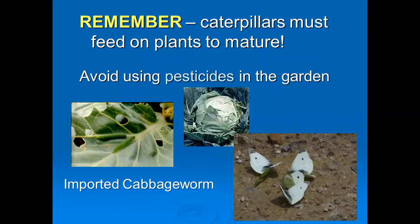I can't say this enough: caterpillars must feed on plants to survive and mature. So you have to avoid using pesticides, or you're going to eliminate caterpillars. Down on the bottom right, these happen to be cabbage worm butterflies, and they do a lot of chewing on our cabbage and cold crops. If you're going to encourage those butterflies, then grow cabbage for them, or grow enough cabbage that you can sacrifice some plants and then you'll have enough to eat as well.